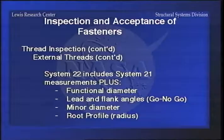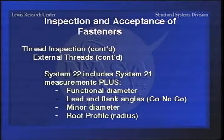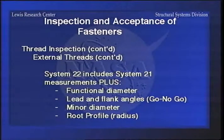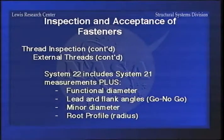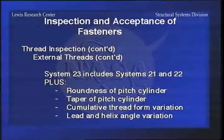The thread groove diameter is the measurement between threads at the pitch diameter point. The functional diameter is what you get with a go/no-go gauge. Then lead and flank angles - that's just go/no-go minor diameter, and then you can measure the root profile. I found that that is not done that much unless somebody insists it's done.